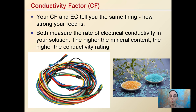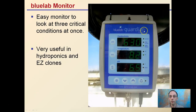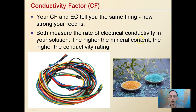CF, or conductivity factor, is basically the same as EC because it tells you the exact same thing — how strong or how concentrated your feed solution is. Both measure the rate of electrical conductivity in your solution; the higher the mineral content, the higher the conductivity rating. That's why on the Blue Lab Guardian you'll notice it reads EC/CF — that's not EC divided by CF, that's EC or CF, as they are interchangeable terms.